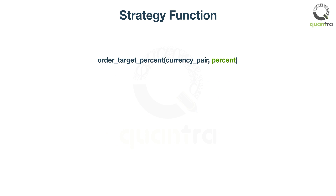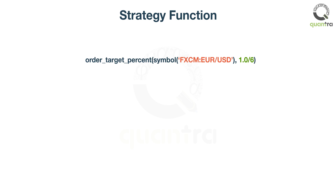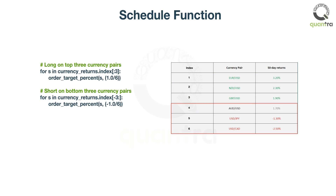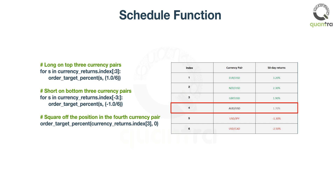We place orders using the order_target_percent function. It takes two arguments: the currency pair and a number specifying how much percentage of your capital should be in that currency pair. For instance, this function call will buy one-sixth of the total capital worth of EUR/USD. If the second parameter is negative, an order will be placed to short the currency pair. We go long on the first three currency pairs, short the bottom three, and exit any position from the fourth currency pair.